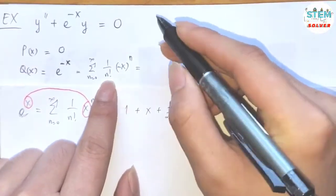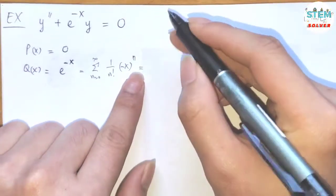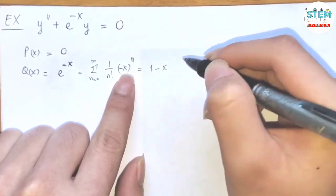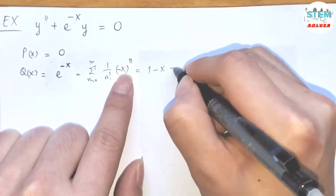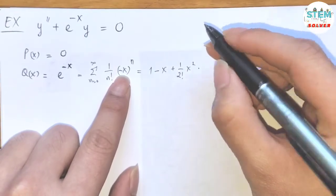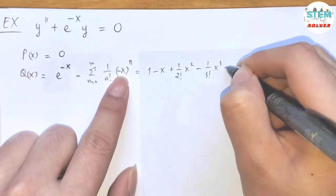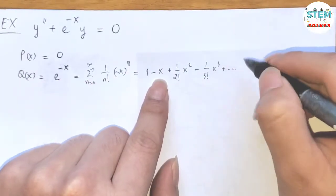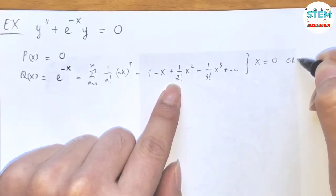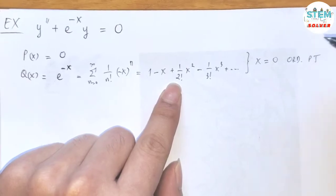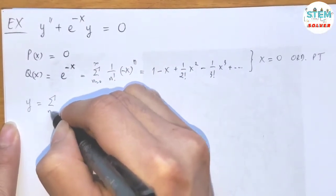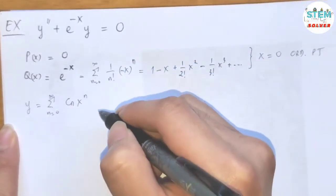If you write out the terms: plug in 0, I have 1; plug in 1, I have negative x; plug in 2, I have 1 over 2 factorial x squared; plug in 3, I have negative 1 over 3 factorial x cubed, plus dot dot dot. As you can see, x equals 0 is analytic, so we have an ordinary point. That means our solution is given in the form y equals the power series from 0 to infinity of c_n x to the n.